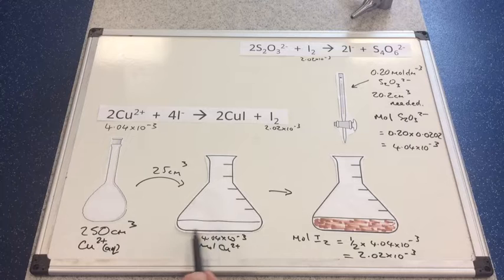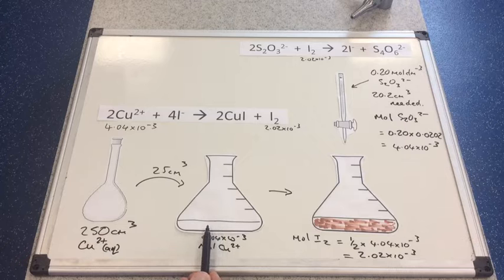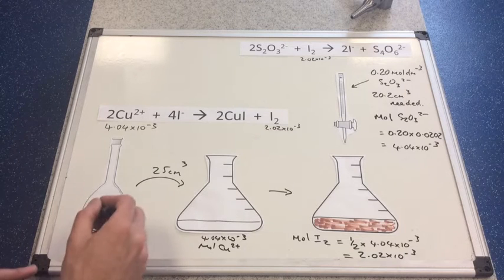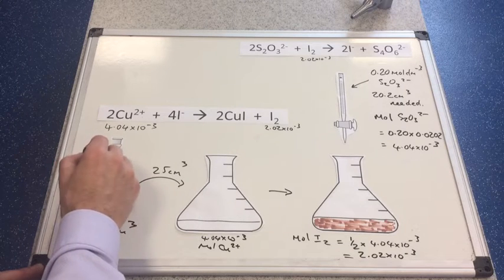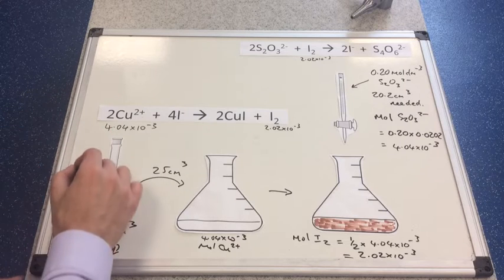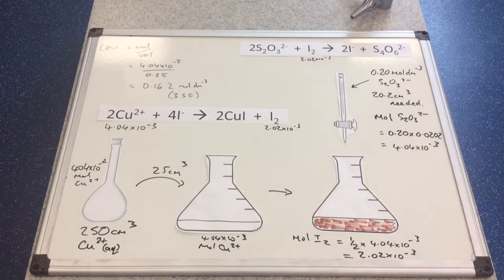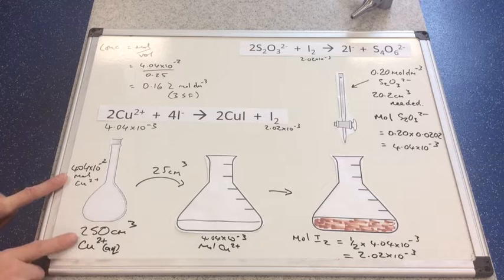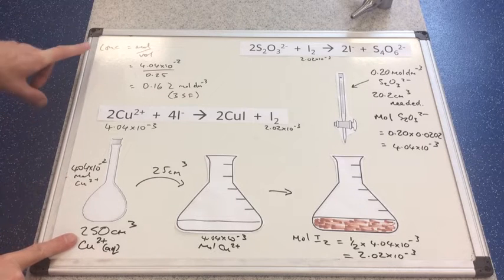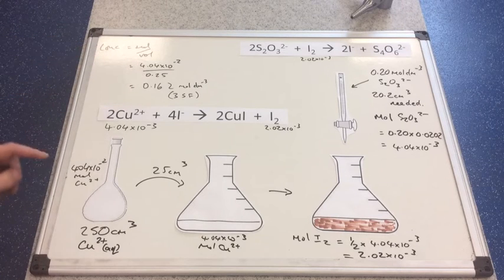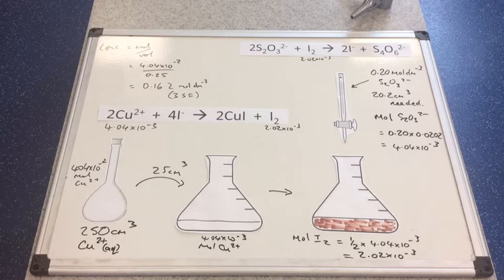Now we scale it up. If there were 4.04 × 10⁻³ mol of Cu2+ in the 25 cm³ aliquot, there's 10 times that in the 250 cm³ flask, so 4.04 × 10⁻² mol of Cu2+ in that flask. Now we know the moles of Cu2+ and the volume of the solution, so concentration = moles ÷ volume in dm³, which gives 0.162 mol dm⁻³ to three significant figures.